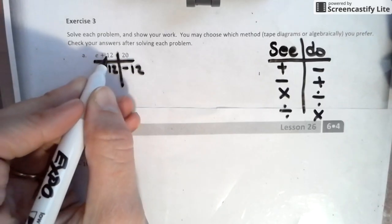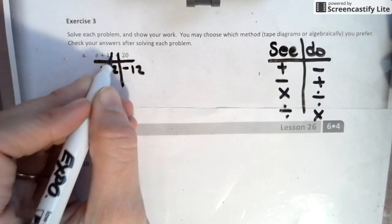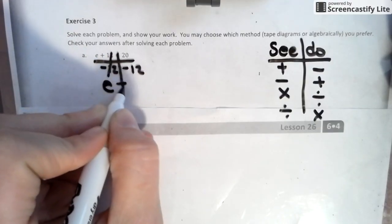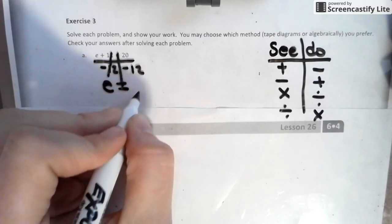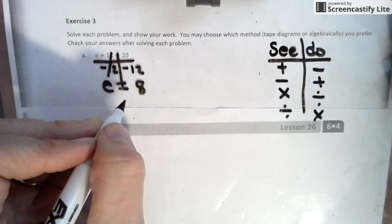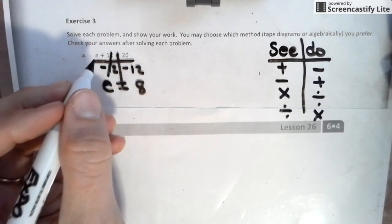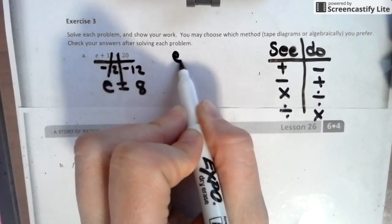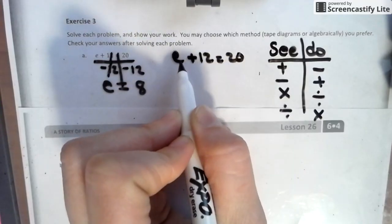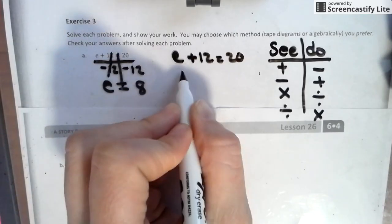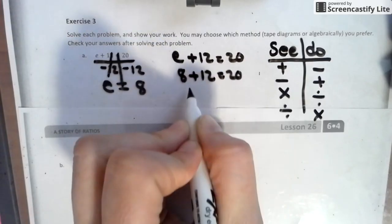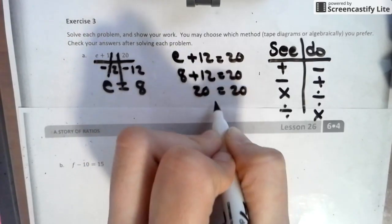So by having 12 and taking 12 away, that allows us to cross that out. On this side we're left with just the letter E. Here's our equal sign, and then 20 minus 12 is 8. Now we're back to being balanced. So they say, hey, check your answer afterwards. So checking your answer is nothing more than taking the original question, and in place of the letter you're going to put the number you just got, just like we did a couple lessons ago with substituting, and we see if we're correct.